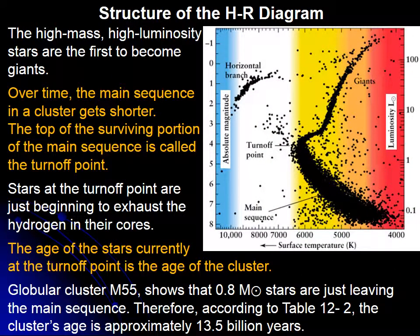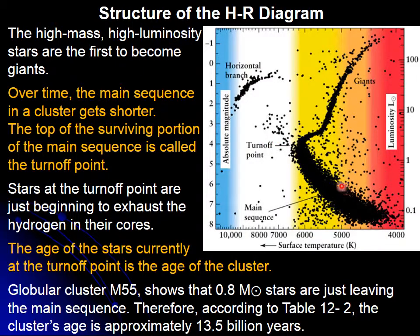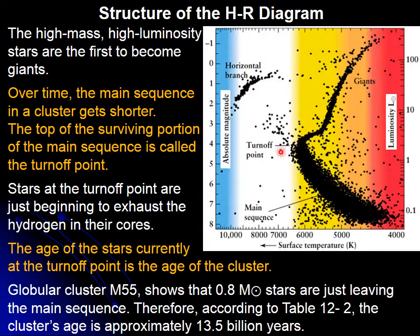Going back to the same case: the high mass, high luminosity stars are missing because they already became giants. Over time, the main sequence gets shorter and shorter. This is known as the turnoff point. The stars at the turnoff are just beginning to have their cores filled with helium, so they start reducing hydrogen fusion and moving out of the main sequence. The age of those stars can be calculated by looking at the turnoff point — this is basically the age of the cluster.